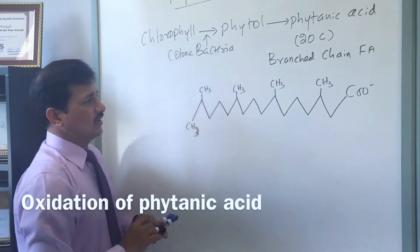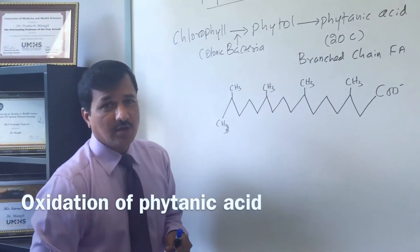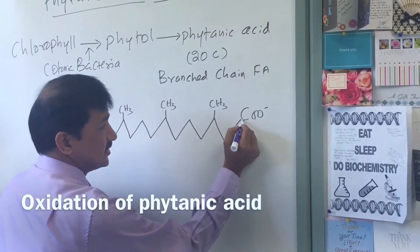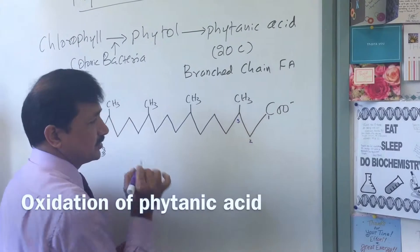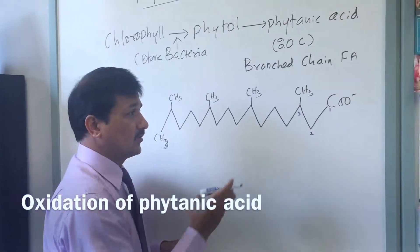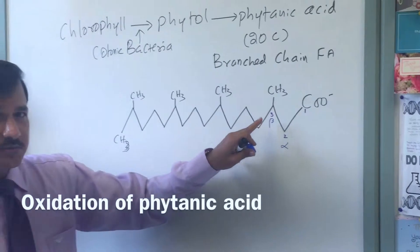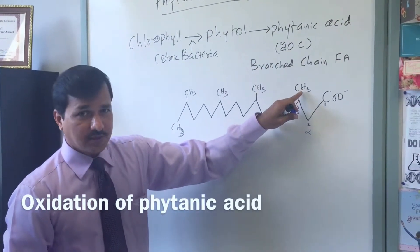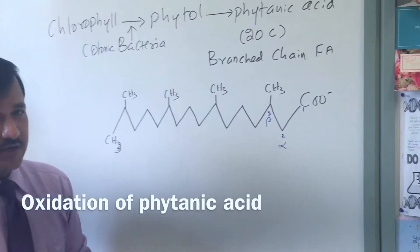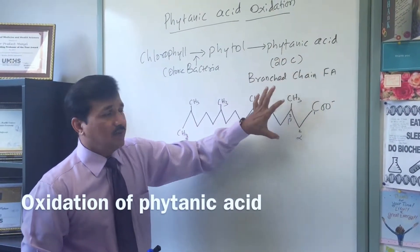As you can see, there are branches — each branch has a methyl group. The problem is you cannot conduct normal regular beta oxidation on phytanic acid, because in the classic numbering the first carbon is C1, second is C2 (alpha carbon), and third is C3 (beta carbon). In beta oxidation, oxidation of the beta carbon occurs. However, the beta carbon here has a methyl group attached, creating steric hindrance, so beta oxidation cannot proceed for this fatty acid.